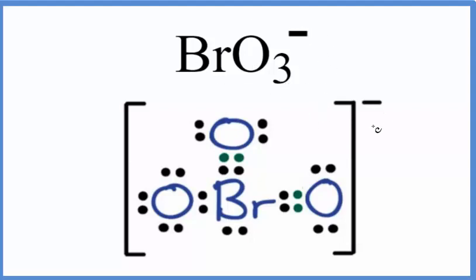The first thing we need to do is look at the Lewis structure for the bromate ion. So this is a Lewis structure for the bromate ion here.